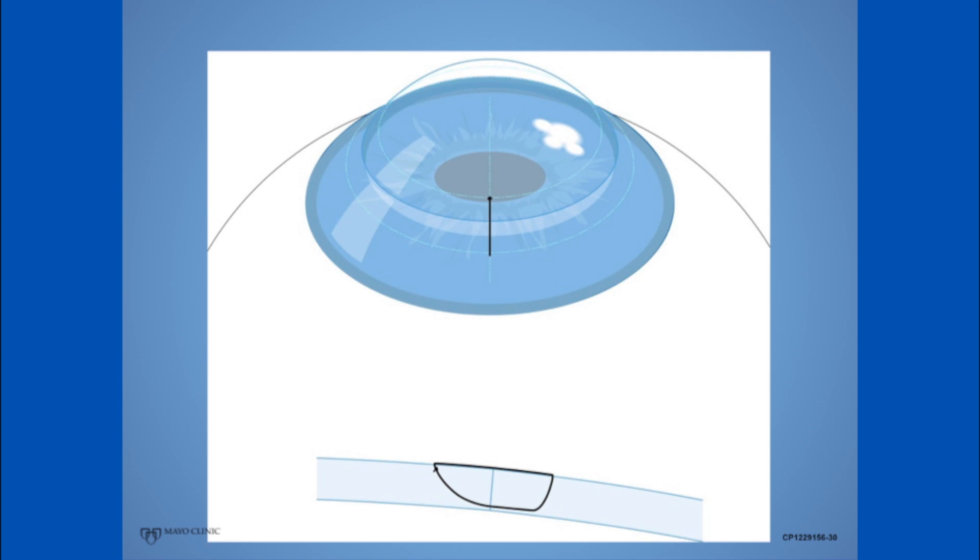First, we want the suture to be equally long on the graft and the host side of the wound, and we want that length to be consistent at each suture position around the circumference of the graft.